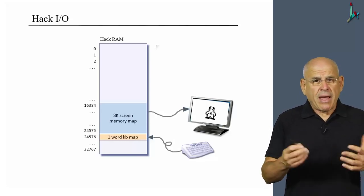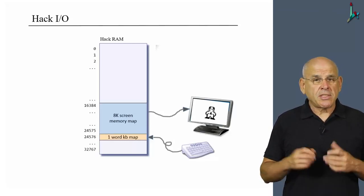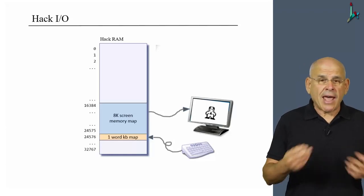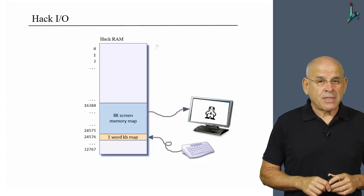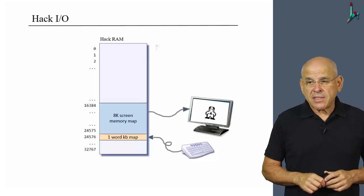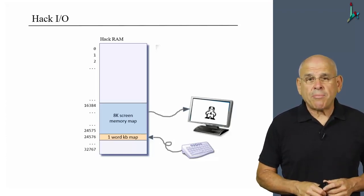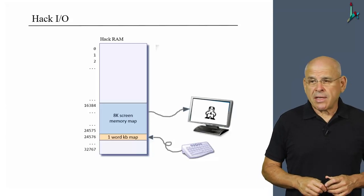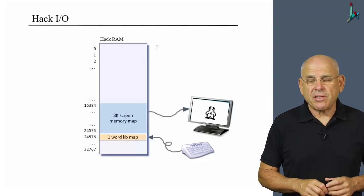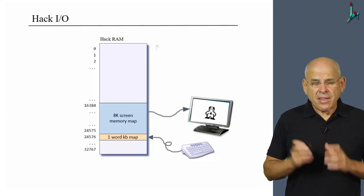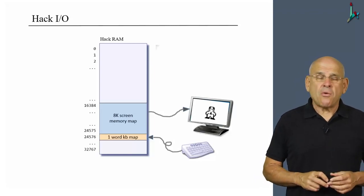By convention, we allocate a certain space in the RAM to represent or stand for the screen. Likewise, we allocate a single 16-bit register in the RAM to represent the keyboard. This 16-bit representation is all that is needed to represent any possible character in the Unicode character set. This is called the keyboard memory map, which is a single RAM register.